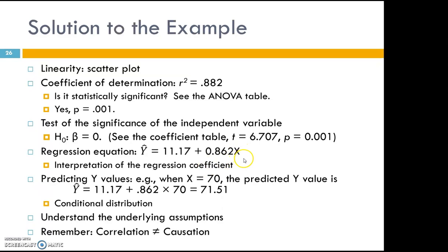If you want to make a prediction — for example, for a student who had a score of 70 on test 1, what would be the predicted score on test 2? You plug 70 into the regression equation: 0.862 times 70 plus 11.17. The predicted y-value is 71.5.